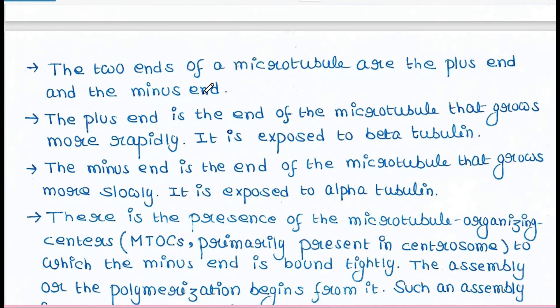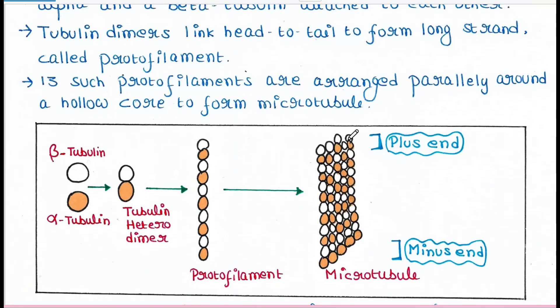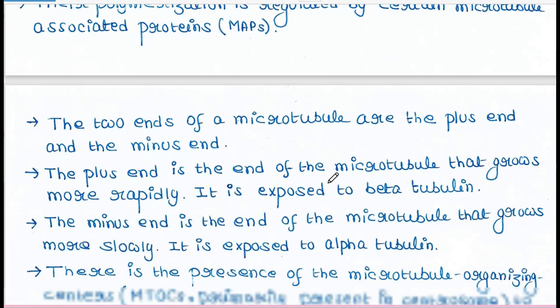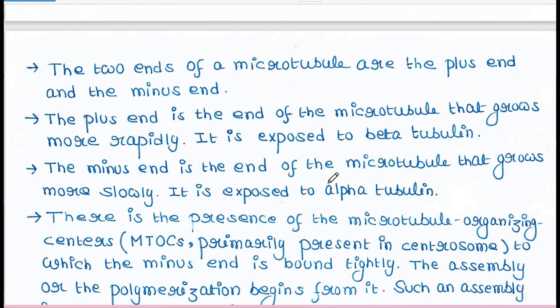The two ends of a microtubule are the plus end and minus end. The plus end is the end of the microtubule that grows more rapidly and it is exposed to beta tubulin. So this is the fast-growing end.